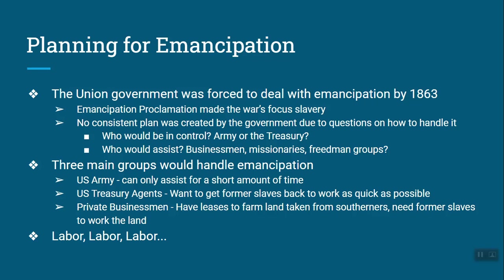They also had to plan for emancipation — for the freedom of the slaves — and that started in 1863. On January 1st, 1863, Lincoln published the Emancipation Proclamation, which made the war about slavery. The problem was there was no government plan on what to do. They weren't sure who would be in control of emancipation, fighting between the army and the treasury department. The army had the men, the treasury had the money, but the army only had enough supplies for itself. There were also questions about whether private businessmen, church missionaries, or freedmen and abolition groups would be involved. There was really no plan.